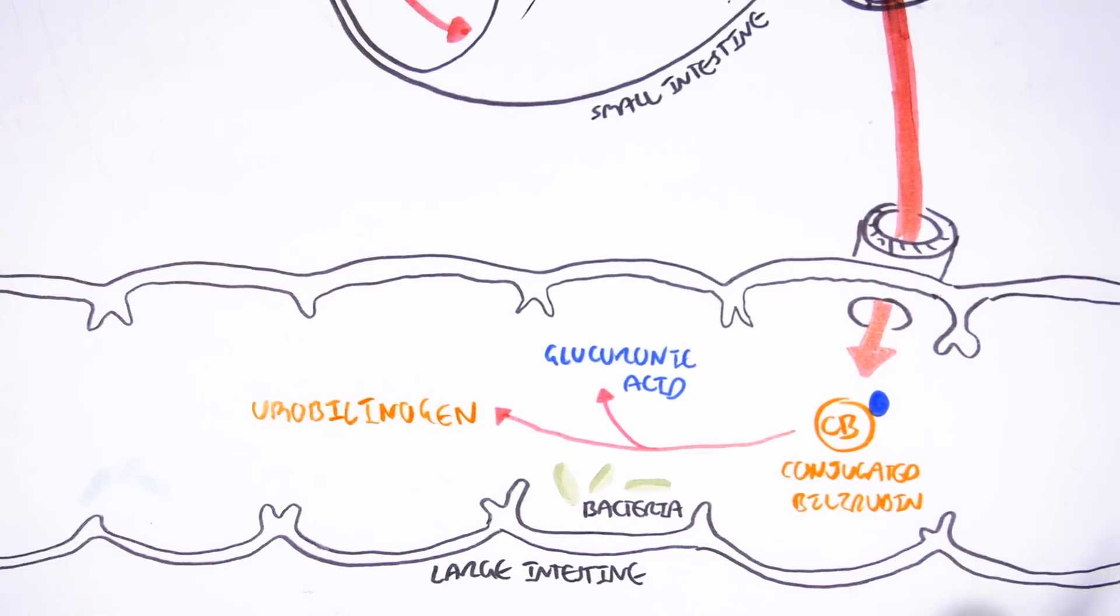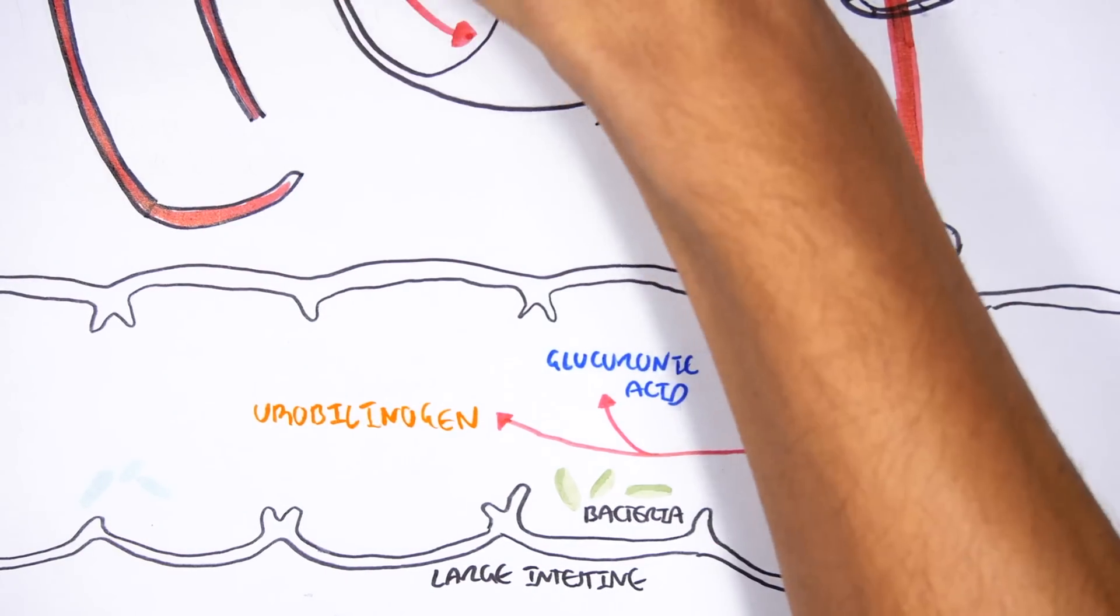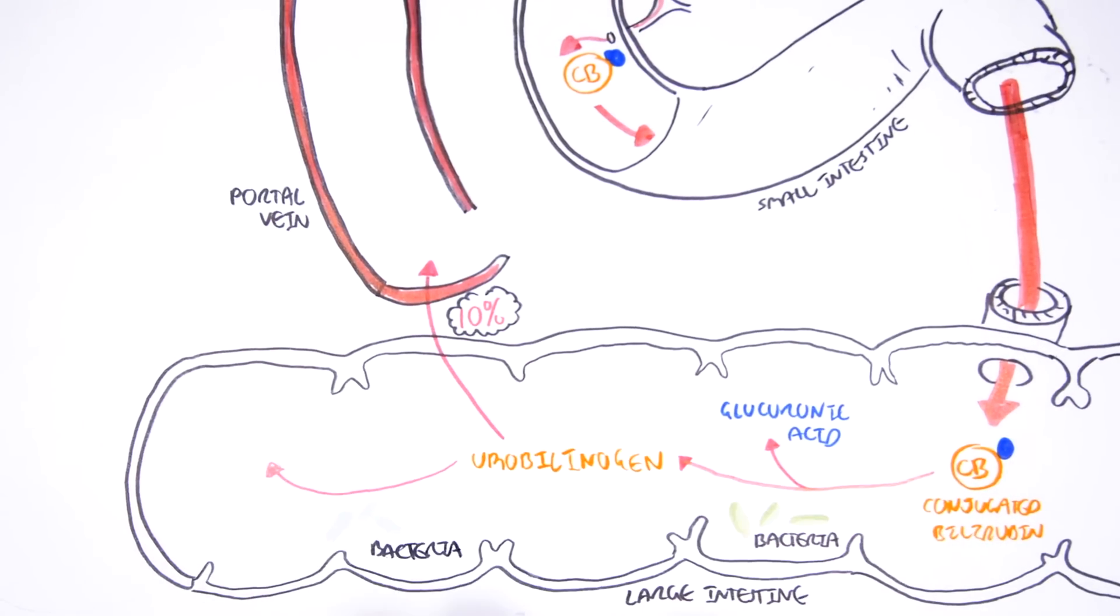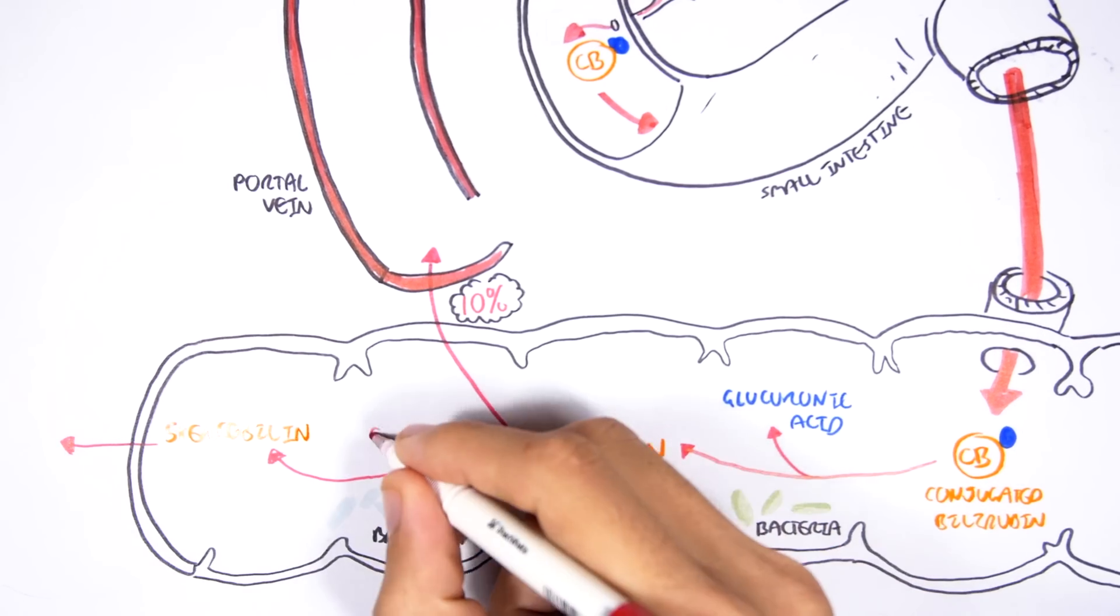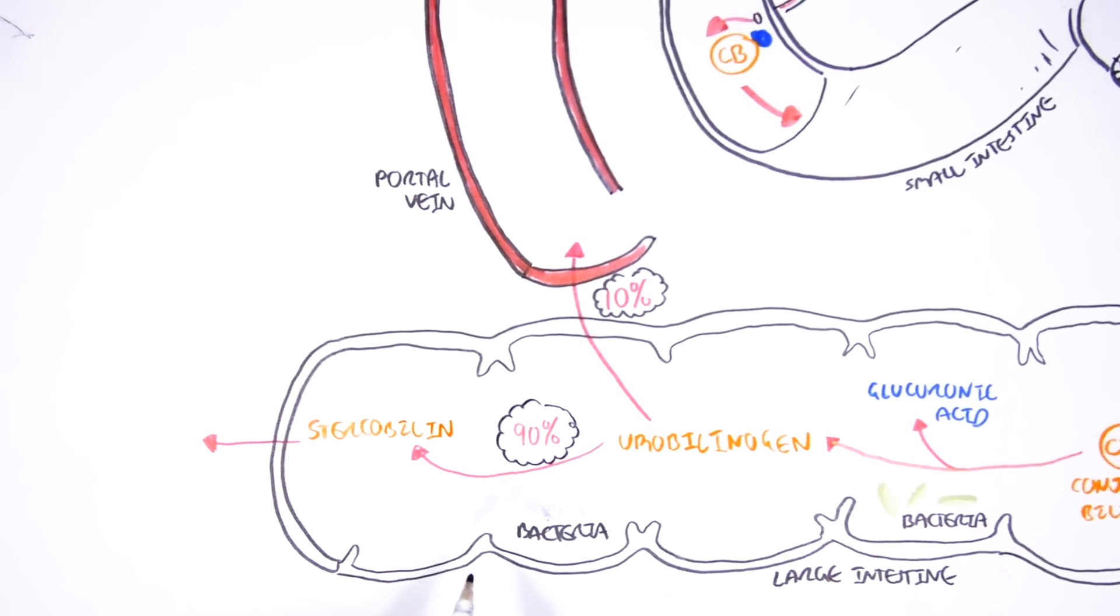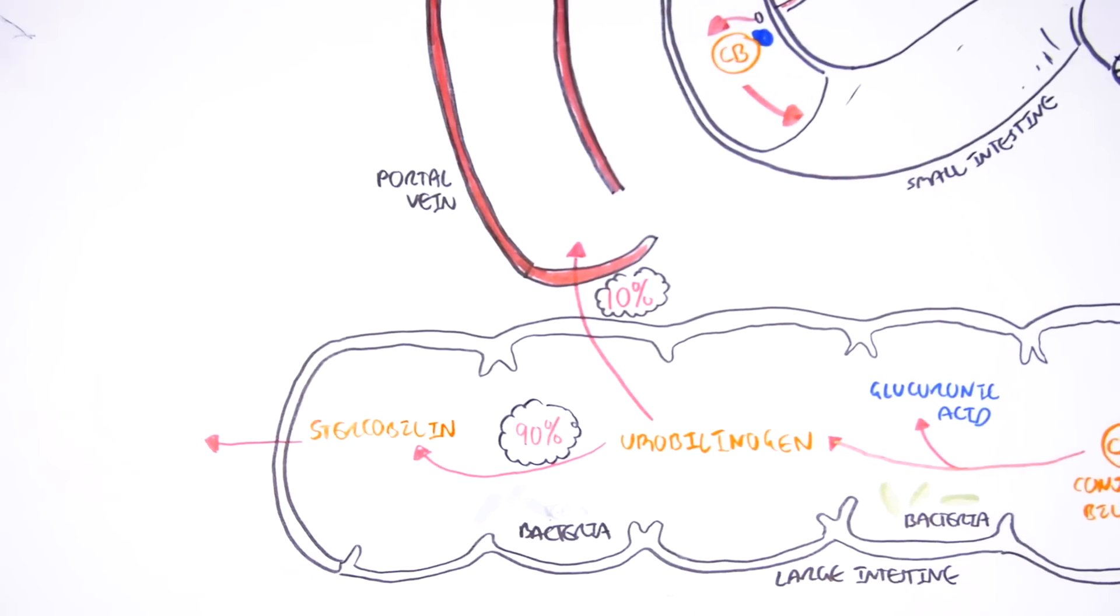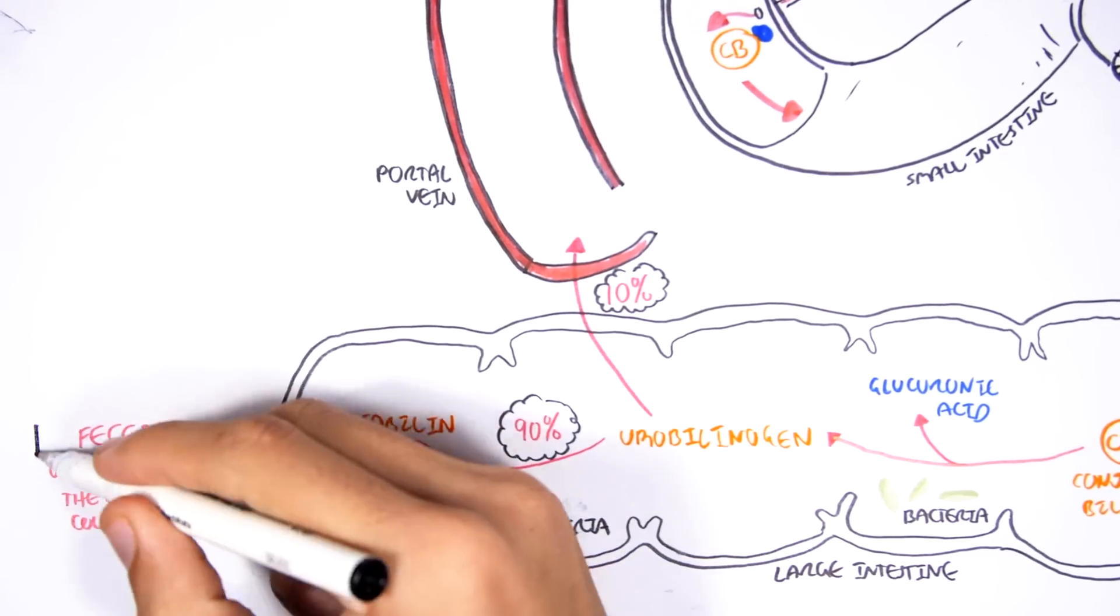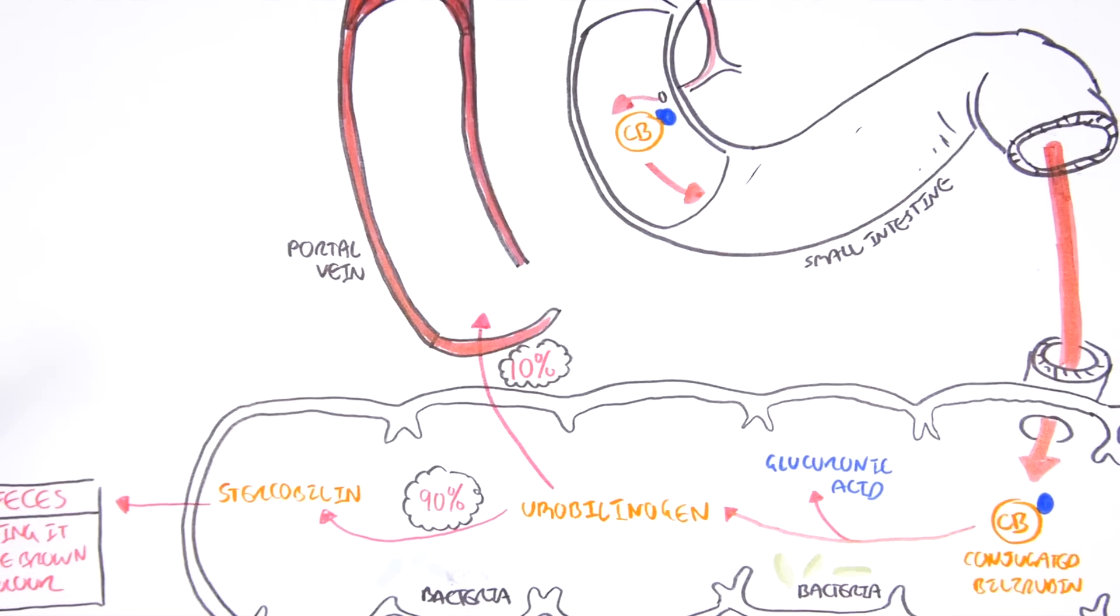Urobilinogen, about 10-15%, is reabsorbed by the blood and bound to albumin. The remaining 85-90% of urobilinogen is quickly oxidized by other intestinal bacteria to form stercobilin, which has a brown-colored pigment. And the stercobilin will then be excreted by the body, giving poo or feces its brown color.